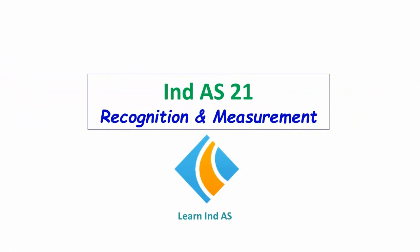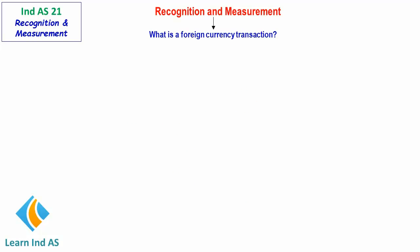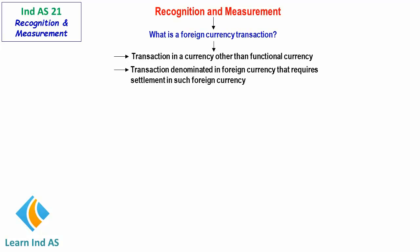In this video, let us see the recognition and measurement of foreign currency transactions in the books of accounts. A foreign currency transaction is a transaction in a currency other than the functional currency of the entity. It is denominated in foreign currency and requires settlement in such foreign currency.